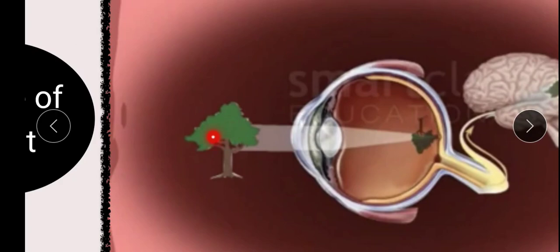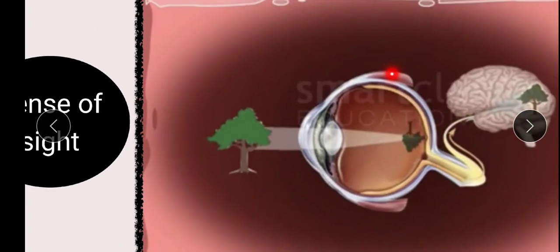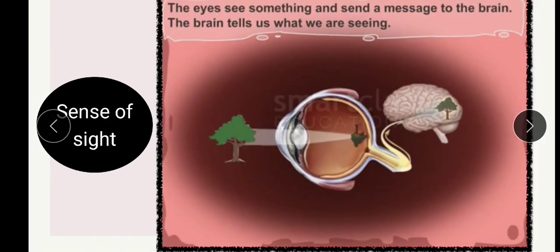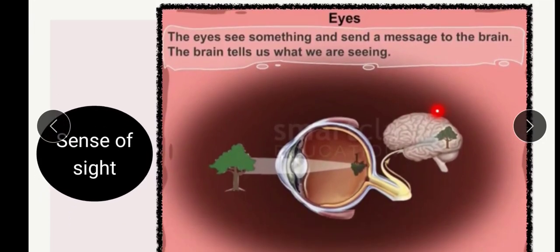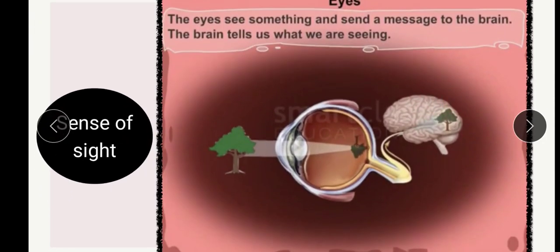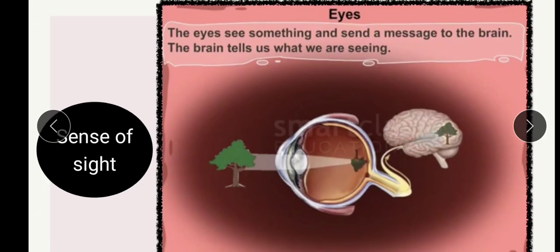The light ray falling on the tree enters into the eyes that are watching. It forms an image on the sense organ eye. This information is sent to the nerves in the eye. The nerves carry the information from the eye and send it to the brain. The brain processes the information of what you are seeing - telling you that you are watching something called a tree - and sends back information through other nerves to the body parts to react accordingly.